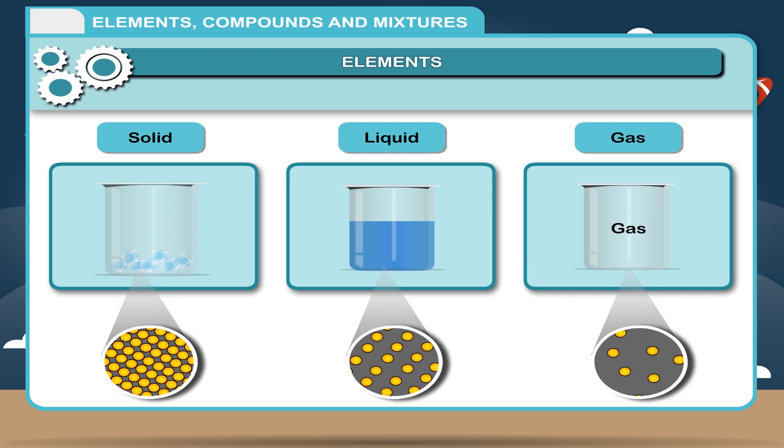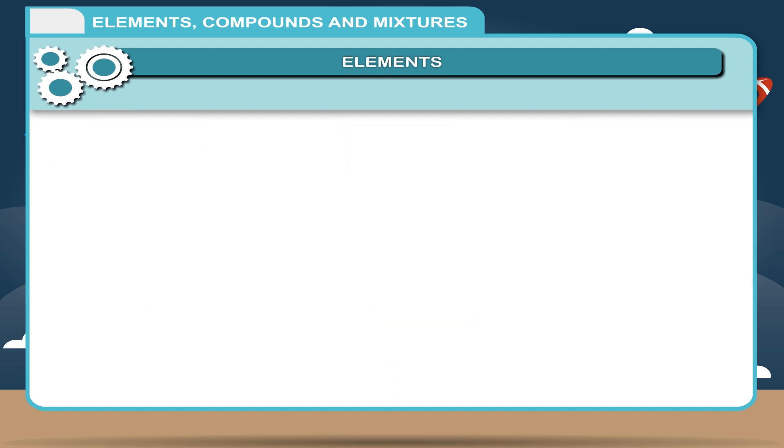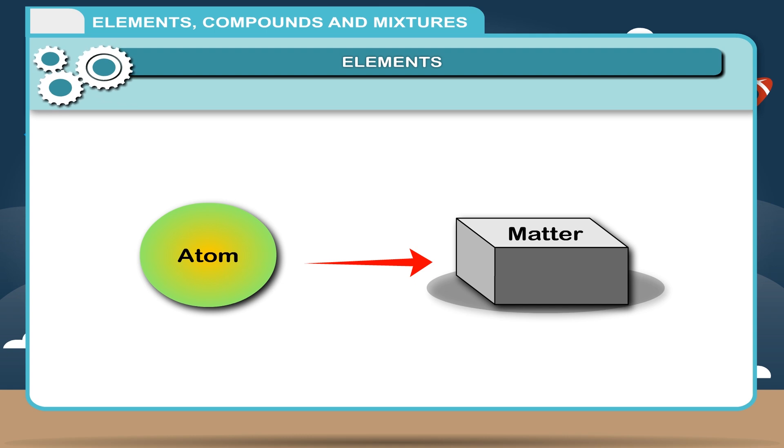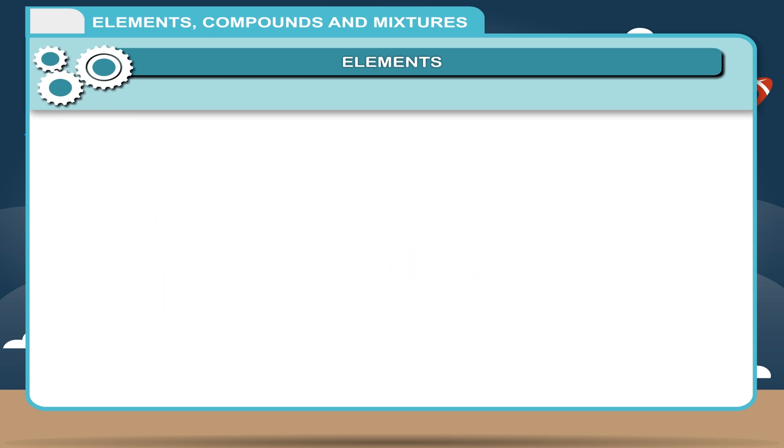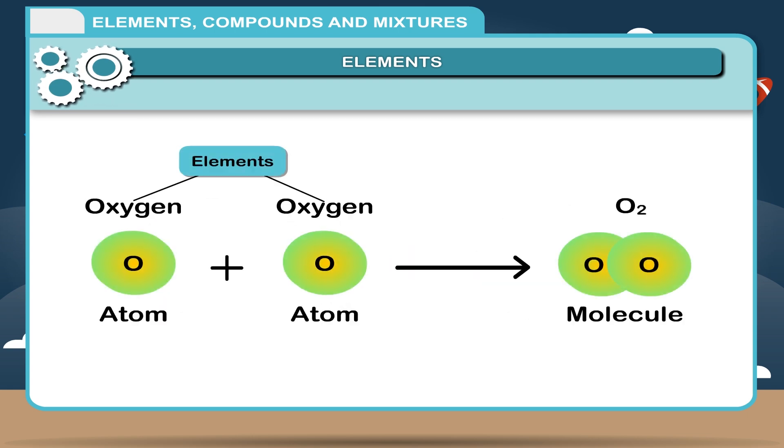We have learned previously that various states of matter exist due to different arrangement of molecules in them. Now we will learn that molecules are not the smallest particle of matter, but it is an atom which is the smallest particle of matter. An atom is the smallest particle of an element which may or may not have independent existence but always takes part in a chemical reaction. All elements are made up of atoms.